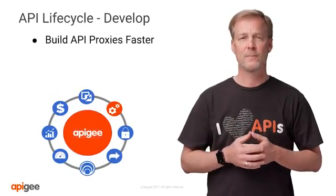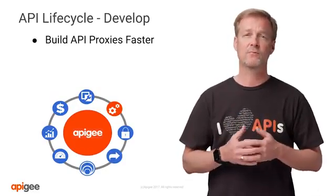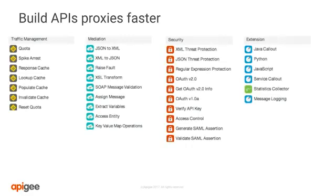In the develop phase, we help engineers create API proxies faster by providing a robust and comprehensive suite of pre-built proxies. With over 30 ready-to-use and configurable policies, with traffic management you can manage interactions with API consumers and optimize performance with policies such as quotas and cache management. Mediation to transform, translate, and reformat data for easy consumption. Security to protect APIs and back-end systems from attacks. And extension policies to expand with programming when needed and to collect statistics and log messages — all delivered out of the box for use by API engineers.